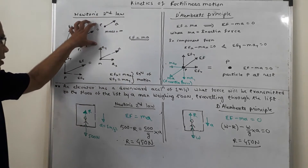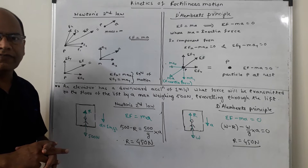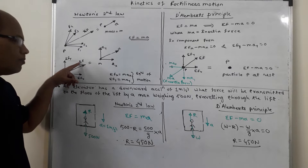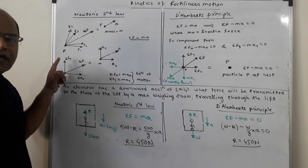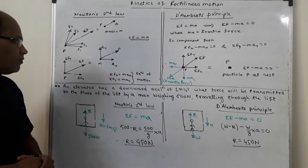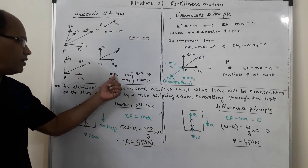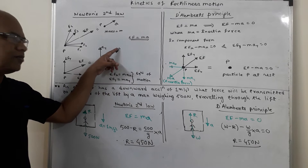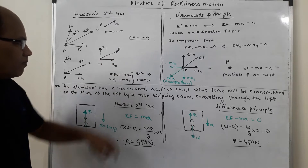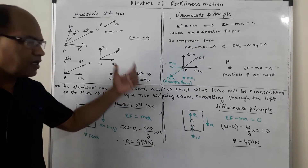Now, considering the same problem, ΣF is the resultant force. But force is a vector quantity and acceleration is also a vector quantity. As such, it is better to resolve these vector quantities into their components. ΣFx is the x-component of the resultant force, ΣFy is the y-component of the resultant force, and Ax and Ay are respectively the x and y components of the acceleration. The same equation ΣF = MA can be written as ΣFx = M·Ax and ΣFy = M·Ay. If we write the equations in this form, these equations are called the equations of motion, and we can handle problems of kinetics using these equations of motion.